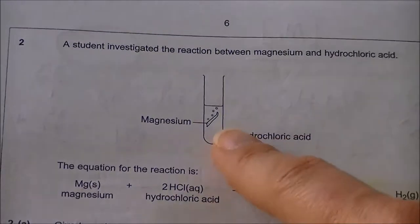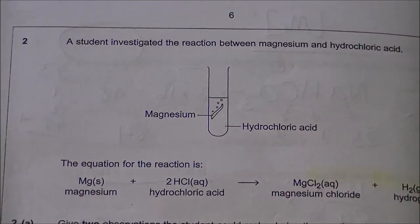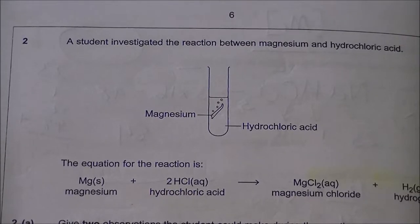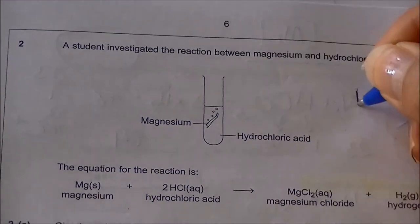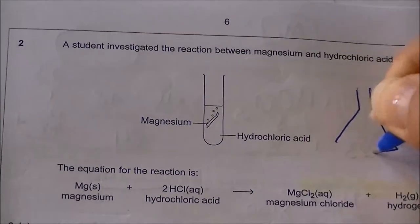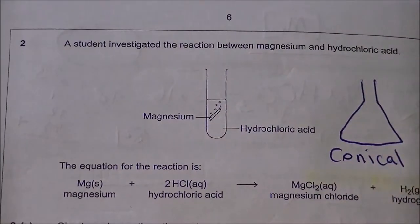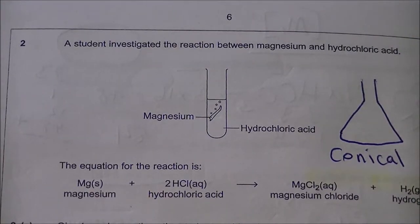The magnesium is drawn as a solid, and the little circles represent bubbles of gas. So you've got an experiment that's going to fizz, and you might remember — and are expected to remember — that the magnesium piece might completely disappear. The acid is in a test tube. They've not labelled the test tube, but they do expect you to know the names of the equipment. Remember, if the equipment looks like an upside-down cone, then it's a conical flask. Use its name.